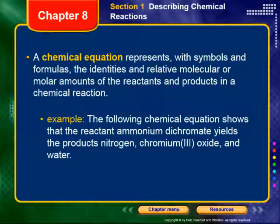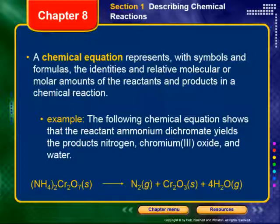For example, the following chemical equation shows that the reactant ammonium dichromate yields the products nitrogen, chromium(III) oxide, and water. We see the reactants on the left side of the arrow — ammonium dichromate — and on the right side of the arrow, we see the products: nitrogen, chromium(III) oxide, and water.